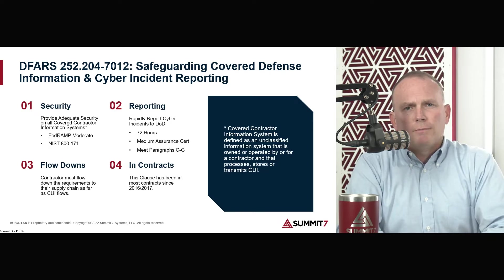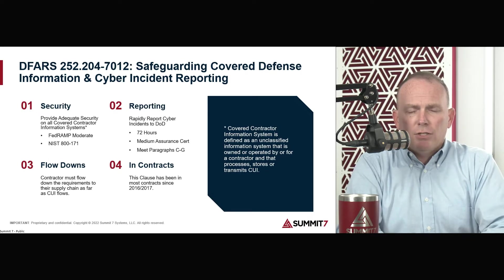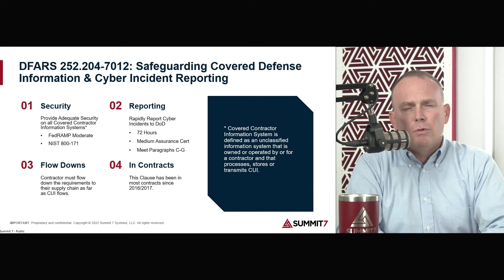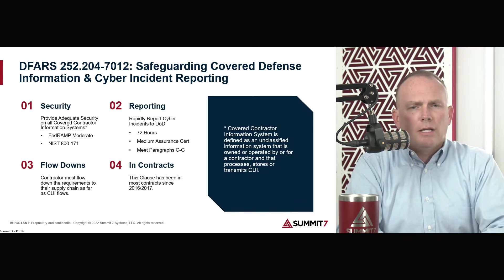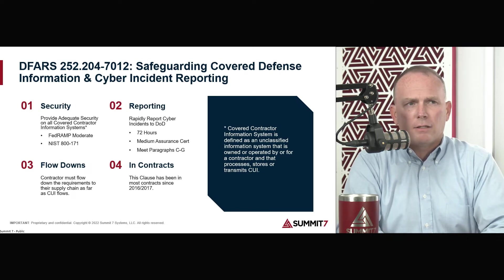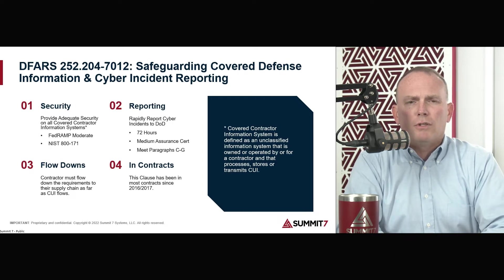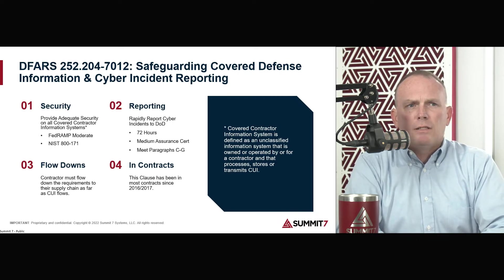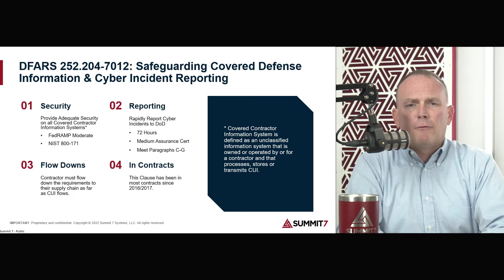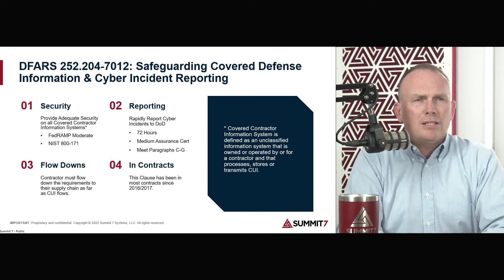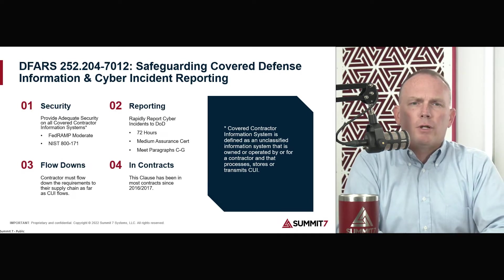The third piece is flow downs. The government wants to make sure these requirements follow the data. Wherever controlled unclassified information flows, you have to flow down this clause. Any subcontractor getting controlled unclassified information from you, or creating it as part of the contract, must receive this DFARS 7012 clause in your contracts. This clause has been in place for most contracts since 2016-2017 and went fully into effect from a compliance standpoint on December 31st, 2017. That's the first and probably the most important of all the DFARS clauses.